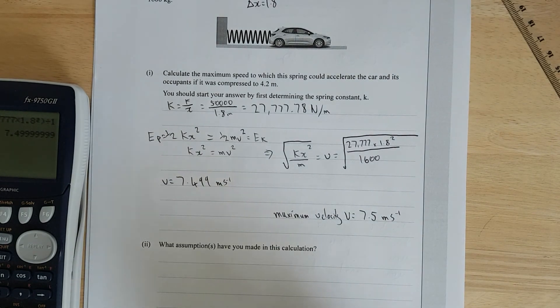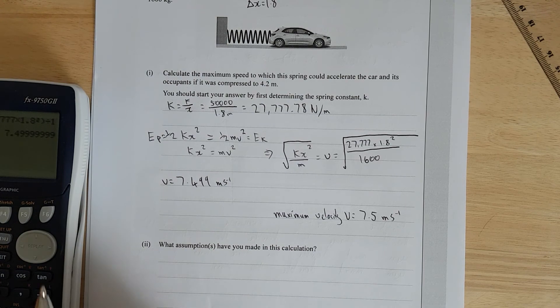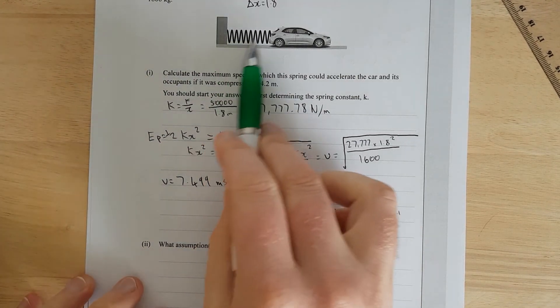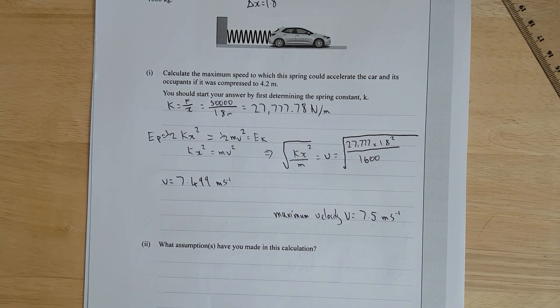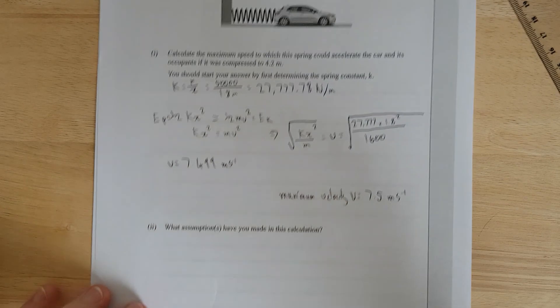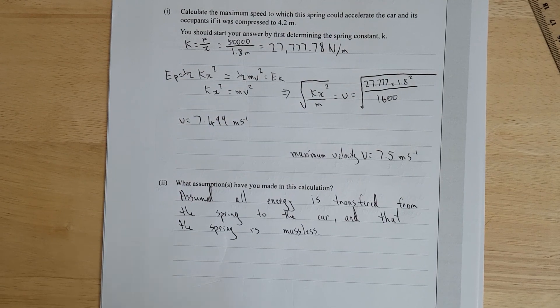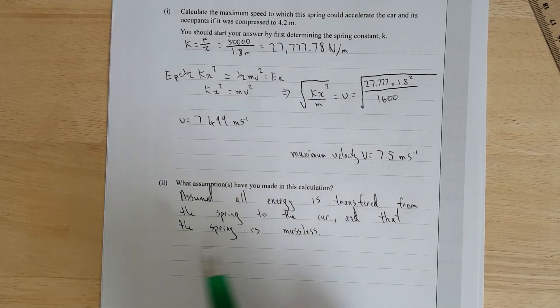What assumptions have you made in this calculation? Well, we assume the spring is completely massless, which is totally not the case. We're assuming that it's like a perfect transfer of energy, which is also probably not the case. We've assumed energy is conserved and that the spring is massless. As I just said, assume all energy is transferred from the spring to the car, and that the spring is massless.